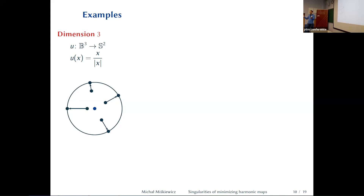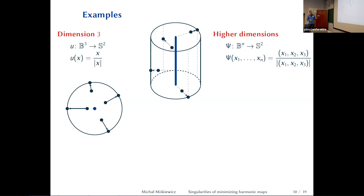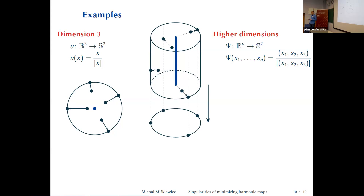In liquid crystals, the orientational field is usually continuous, but sometimes there's a defect or crack that looks exactly like this radial map. So it's not only mathematics — it's real life in some sense. In higher dimensions, you take a map that forgets n−3 coordinates and does the same projection on the remaining three, then you have a whole n−3 dimensional subspace of singularities.